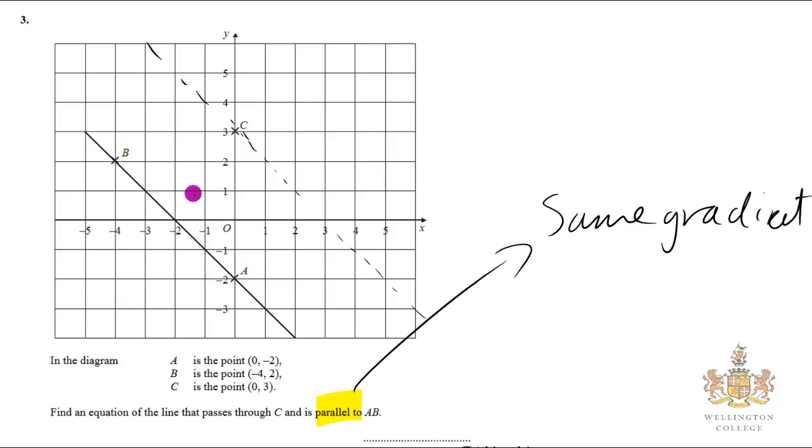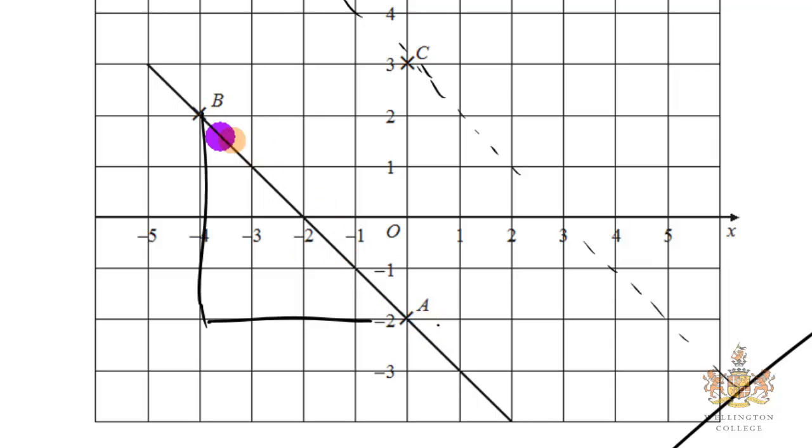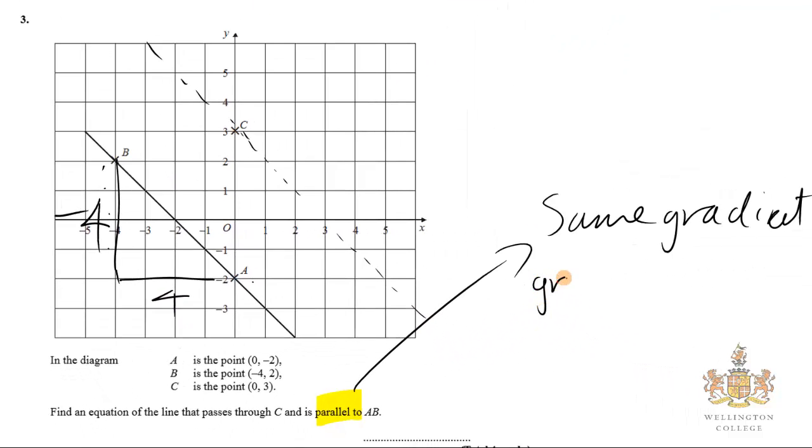So let's find the gradient of the line AB. To find the gradient, we find the change in Y. Change in Y from B to A goes down 1, 2, 3, 4, so minus 4. And the change in X is 1, 2, 3, 4. So the gradient equals the change in Y over the change in X - always write this out, it will help you remember it in future. So minus 4 over 4 equals minus 1. We've got our gradient.